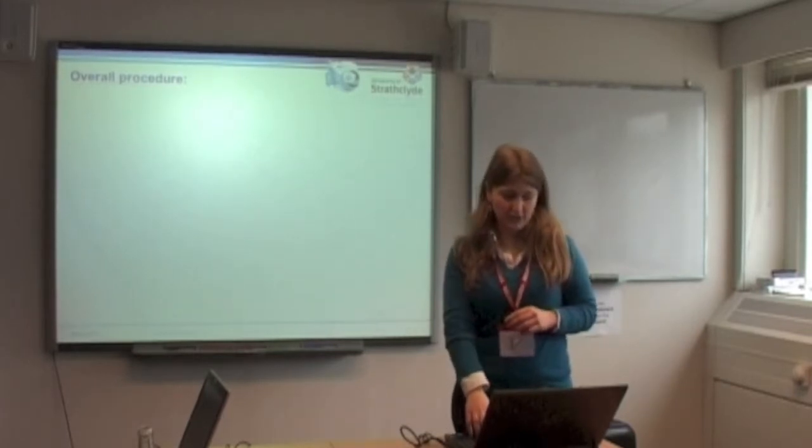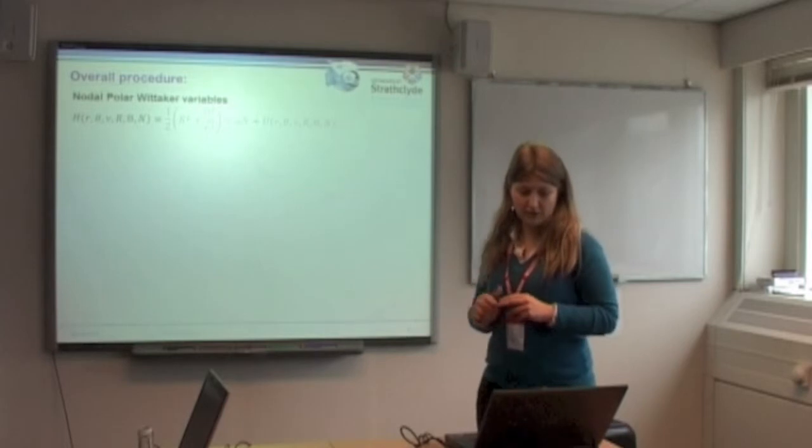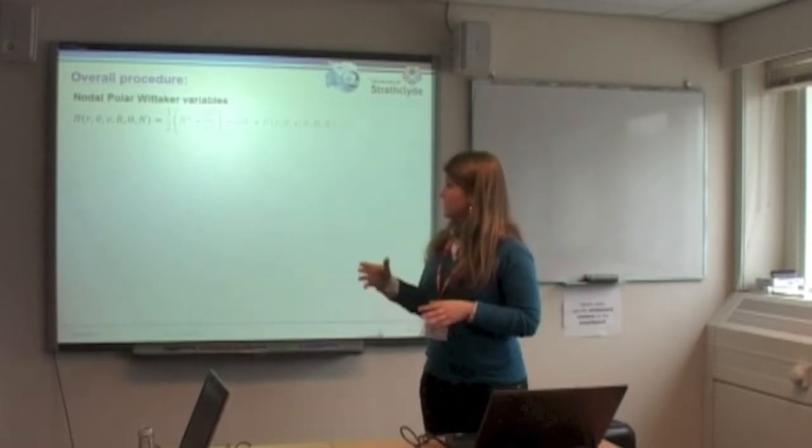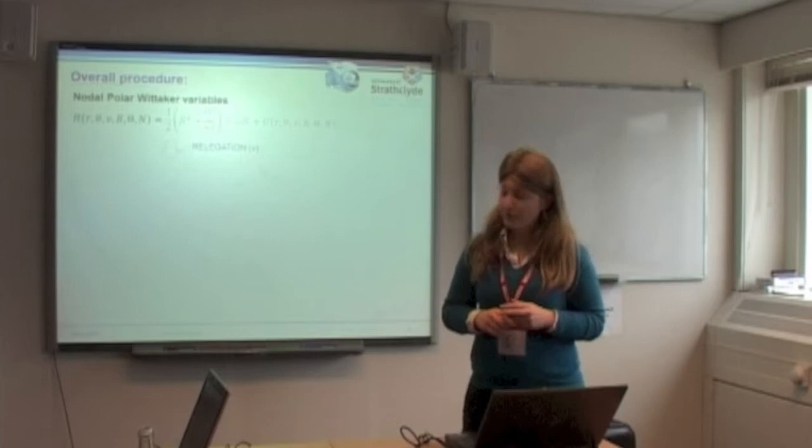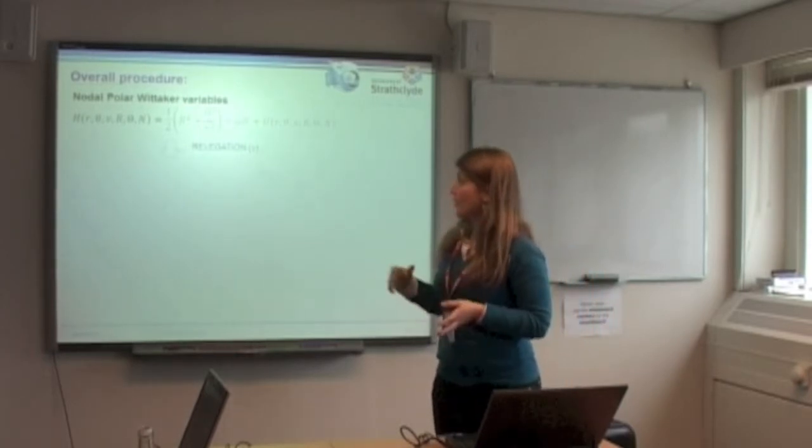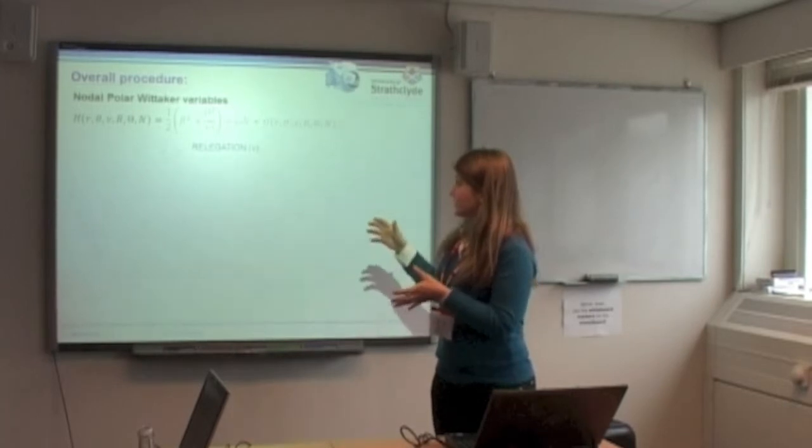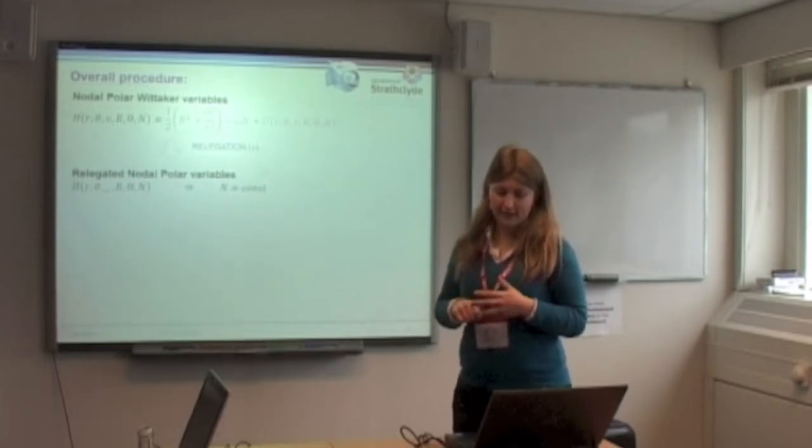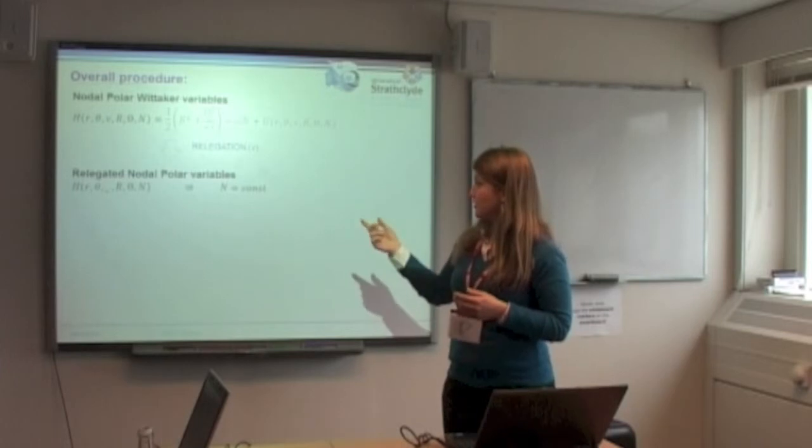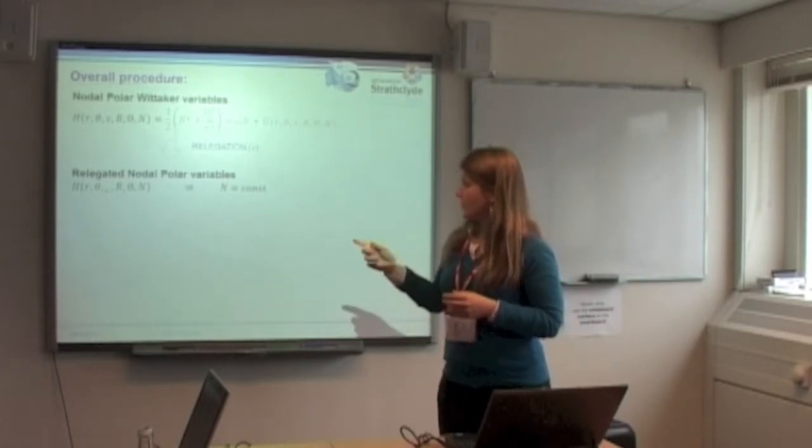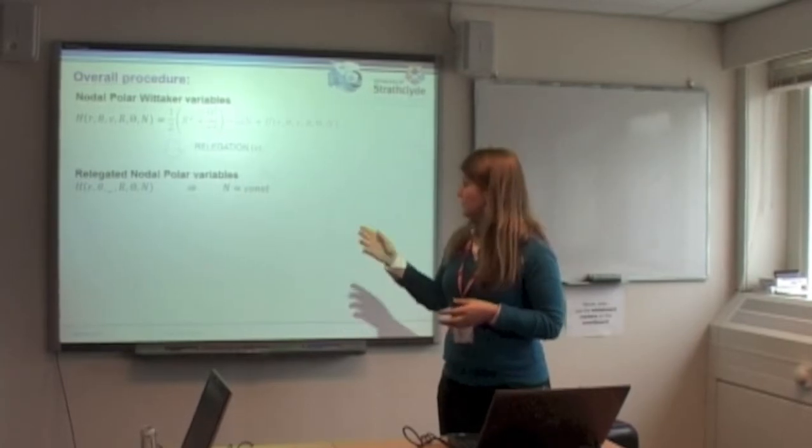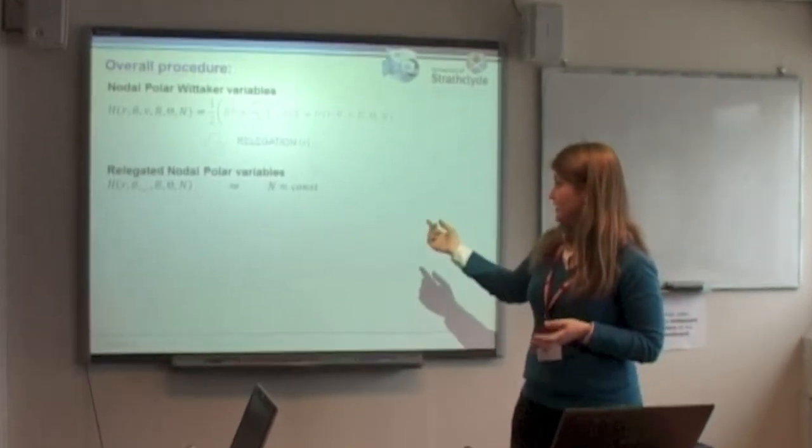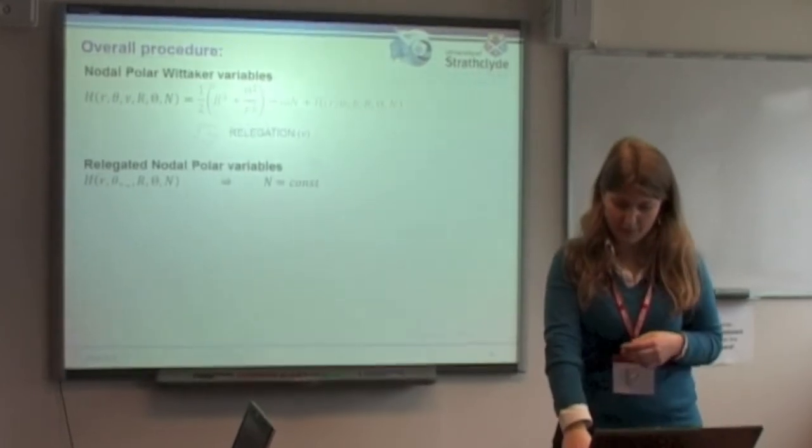The whole procedure that we have done in this study: we take the Hamiltonian that we have seen before, which is depending on six variables, and through the relegation of the argument of node, a procedure that will take the perturbation of the argument of node always smaller, we get a change of coordinates that brings us to the relegated nodal polar variables, in which we have a new Hamiltonian without the presence of the argument of node, so in which the argument of node is cyclic, and then we can get the capital N as constant.